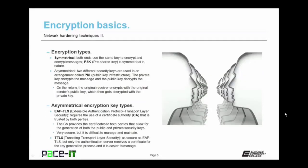There are two basic types of encryption. There's symmetrical encryption, in which both ends of the communication channel use the same key to encrypt and decrypt the message. Pre-shared key, or PSK, is symmetrical in nature. Then there's asymmetrical encryption, in which two different security keys are used in an arrangement called PKI, or public key infrastructure. The private key encrypts the message, and the public key decrypts the message. On the return side, the original receiver encrypts with the original sender's public key, which then gets decrypted with the private key. In this arrangement, the private key cannot decrypt what it encrypted, and the public key cannot decrypt what it encrypted — so it only works if there are two separate keys.